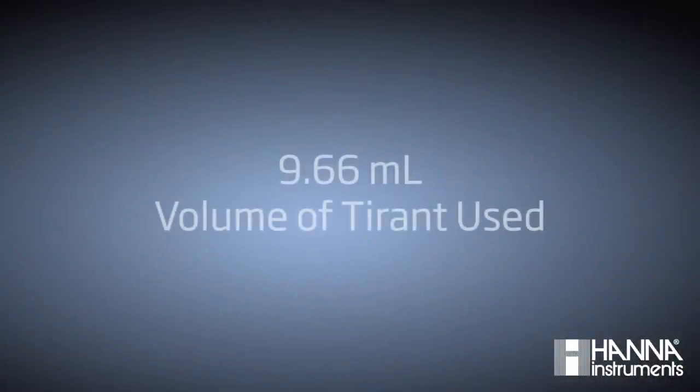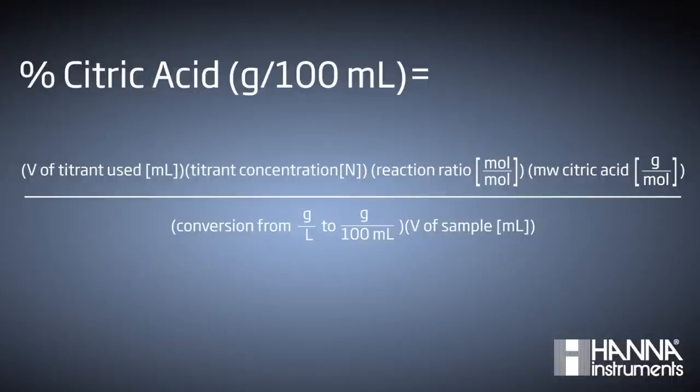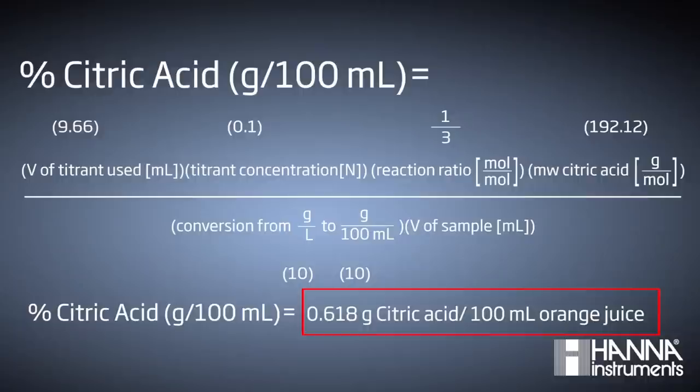If we go back to our titration equation, we can look at our variables, which are 9.66 mL, our volume of titrant used, multiplied by 0.1 normal sodium hydroxide, which is our titrant strength, our reaction ratio of one mole of citric acid to three moles of sodium hydroxide, our molecular weight of citric acid, which is 192.12, over our conversion factor of 10, and our sample size, which is 10 mL. When we run this equation, we get a result of 0.618 grams of citric acid per 100 mL of orange juice.